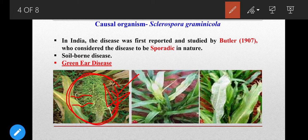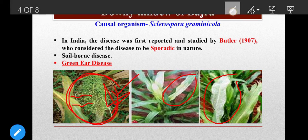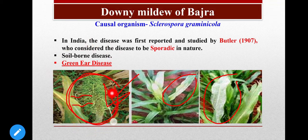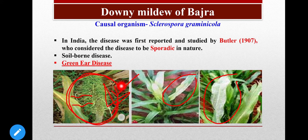The rest of the symptoms are normal for downy mildew: the upper surface will have chlorotic lesions and the lower surface will have downy cottony growth due to sporangiophore production. The only new characteristic is the malformation of the ear into a green ear — the floral parts are converted into twisted leaf-like structures. This is the main characteristic symptom of Downy Mildew of Bajra.